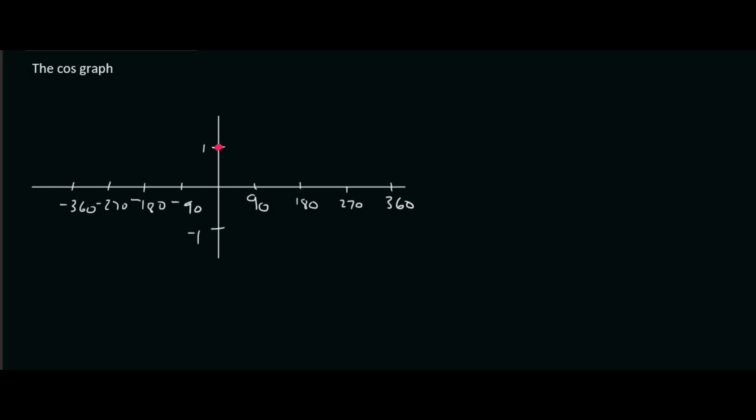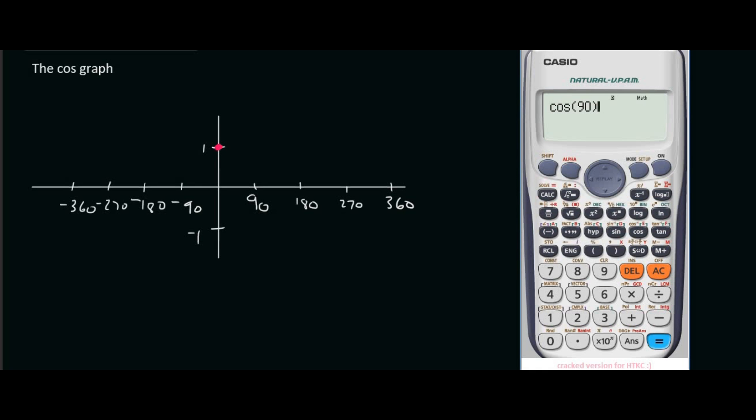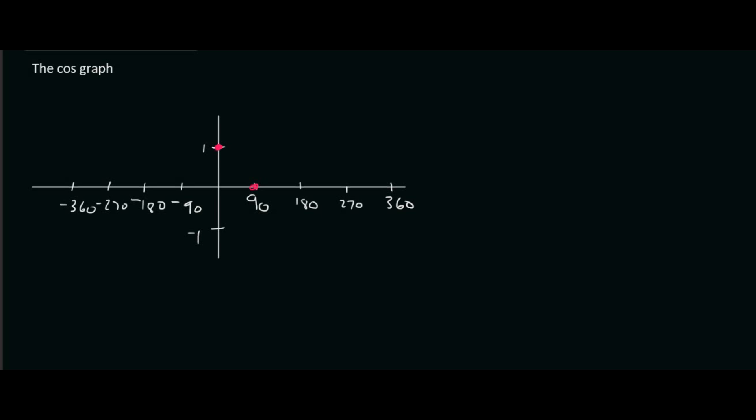Next we're going to try 90 degrees. So we're going to say cos of 90. We can type in cos 90 like that and we're going to get a value of 0. So now we can go at 90. The y value is 0. And then if you had to carry on, so you would type in cos 180, that will give you negative 1.